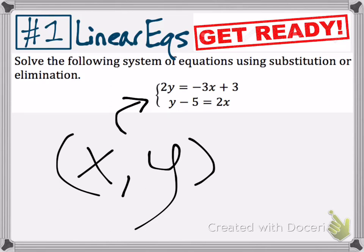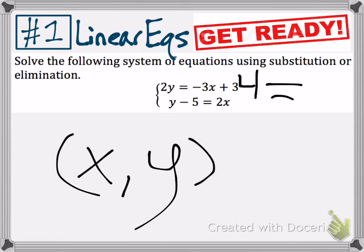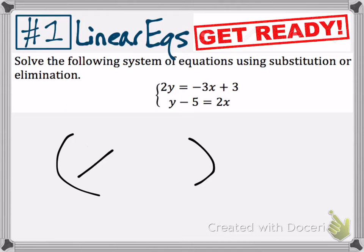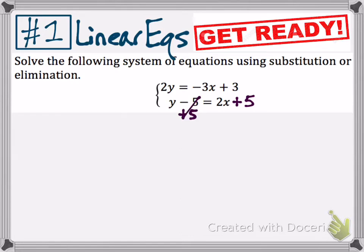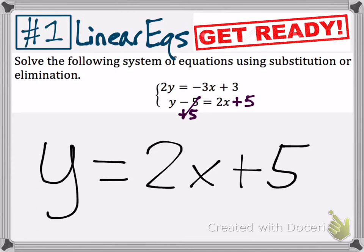If you plug in x and y to both the first and second equation, you would get two numbers that are equal to each other on both sides — like it might say 4 equals 4. The easiest strategy is to use substitution. In order to substitute, you need one variable alone on one side of the equal sign. In the second equation, if you add 5 to both sides, you will have y equals 2x plus 5. That equation can then be substituted into the top equation's y variable.